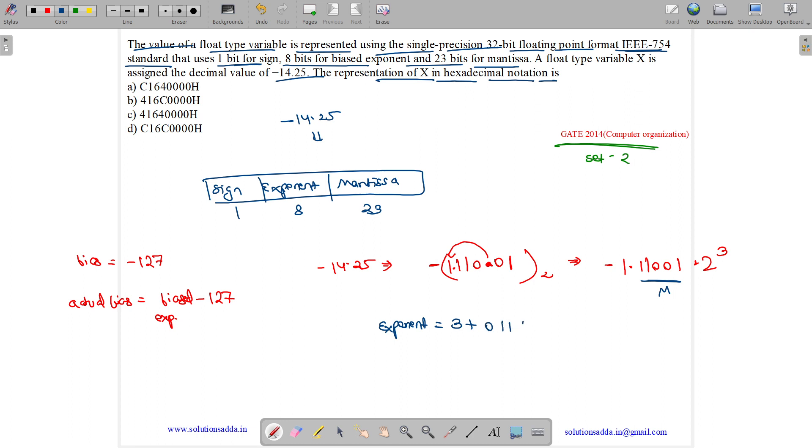So it comes out to be, and what is our representation for 3? It is 11. So 11 plus this gives us 10000010. So this is our actual exponent.